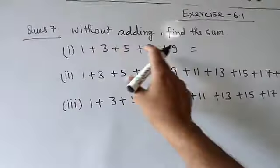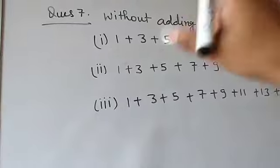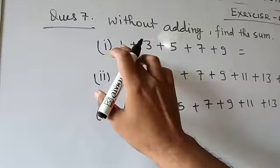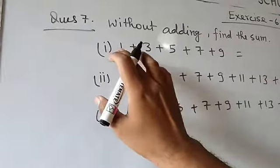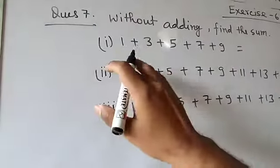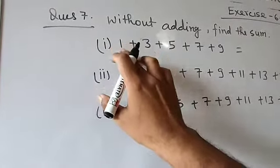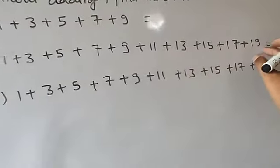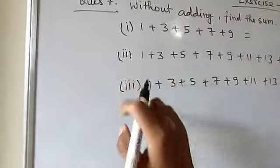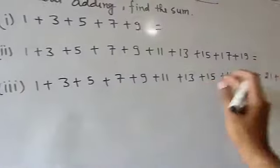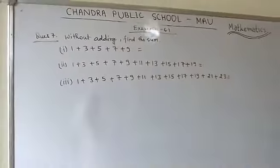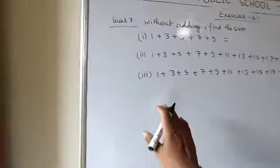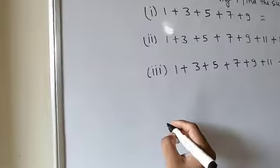The numbers 1, 3, 5, 7, 9 are odd numbers. These are consecutive odd numbers starting from 1. Similarly, 1, 3, 5, 7, 9, 11, 13, 15, 17, 19 are consecutive odd numbers starting from 1. I will now explain how to find the sum of such numbers.